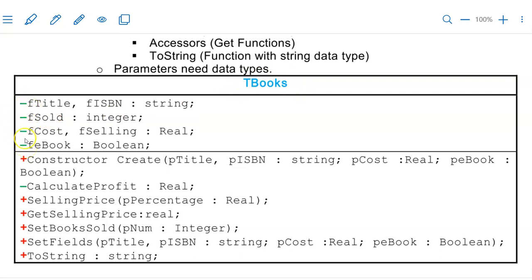So all with a minus that indicates that they are declared under private. These are attributes with their data types, and then below that we indicate all our methods.